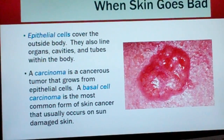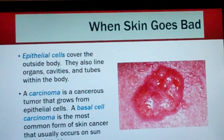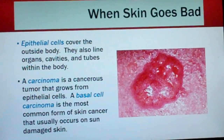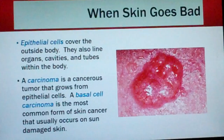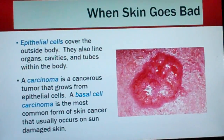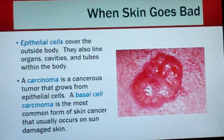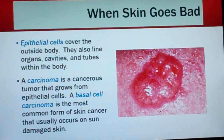When skin goes bad. Epithelial cells cover the outside of the body. They also line organs, cavities, and tubes within the body. A carcinoma is a cancerous tumor that grows from epithelial cells. A basal cell carcinoma is the most common form of skin cancer, and usually occurs on sun-damaged skin.